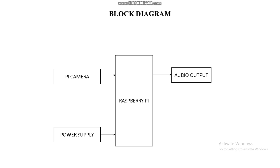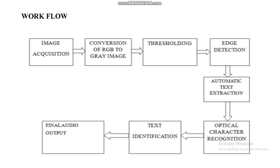In the block diagram, the Pi camera captures objects or pre-trained images, sends them to the Raspberry Pi, which predicts using our SSD CNN neural network and reorganizes to guide the visually impaired person through audio output. The workflow involves image acquisition converted to RGB, then RGB to grayscale. After fixing the threshold, edges are detected, text is extracted using OCR, the text is identified, and finally audio output is generated.